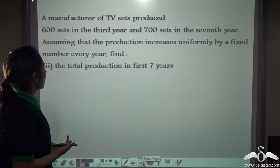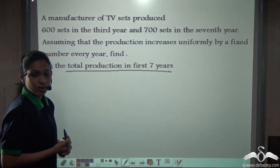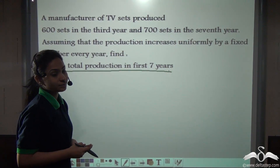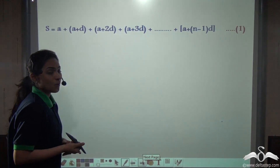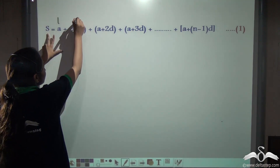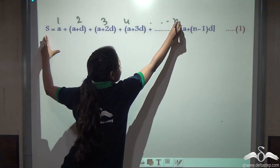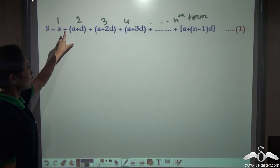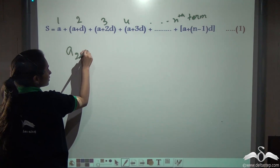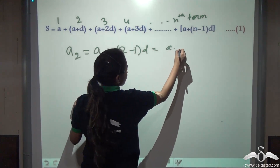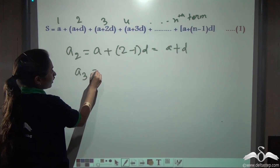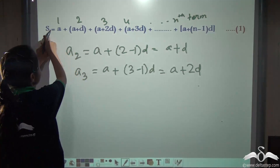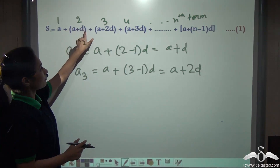Now they are asking for the total production in the first 7 years, meaning we need the sum of TV sets produced in those years. Whenever we find the sum, we add the first term, second term, third term, and so on until the nth term. So S = A + (A+D) + (A+2D) + ... up to n terms.